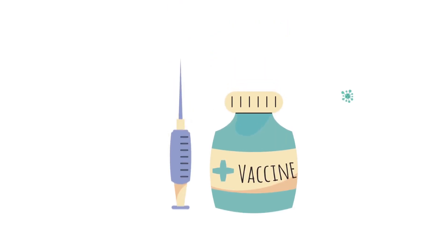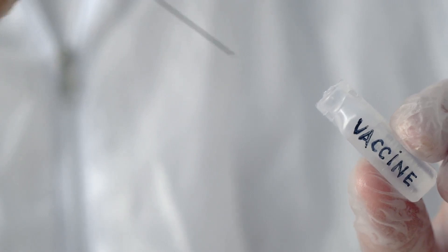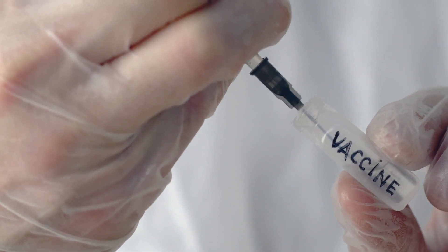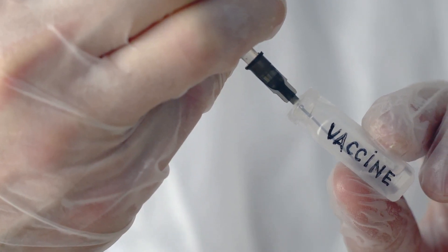In summary, vaccine adjuvants play a crucial role in vaccine development. They enhance the immune response, trigger the production of antibodies, promote long-lasting immunity, and reduce the amount of antigen needed. They are the secret weapons that make vaccines so effective in protecting us from diseases.